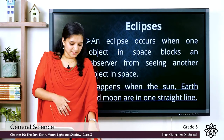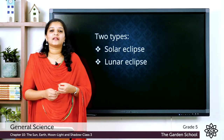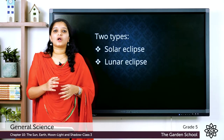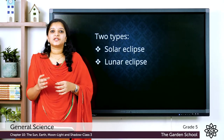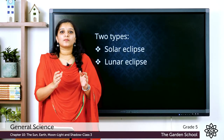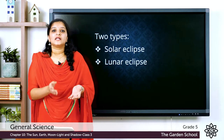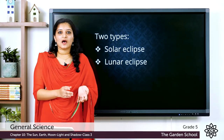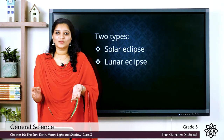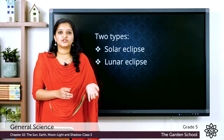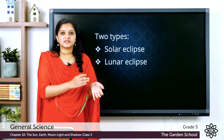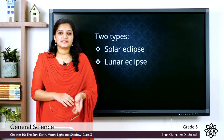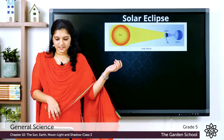There are two types of eclipses: the solar eclipse and the lunar eclipse. They are classified based on the relative positioning of the Sun, Moon, and the Earth. First, let's see what a solar eclipse is.